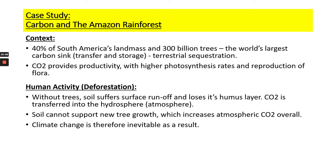However, human activities such as deforestation threaten the Amazon rainforest. Without trees, the soil suffers surface runoff of water and loses its humus layer — losing the ability to grow more trees. CO2 from those trees and from the soil transfers into the atmosphere rather than being stored. This increases atmospheric CO2 levels overall, as carbon feeds back into the atmosphere rather than the soil using it to grow trees — with clear consequences for climate change.